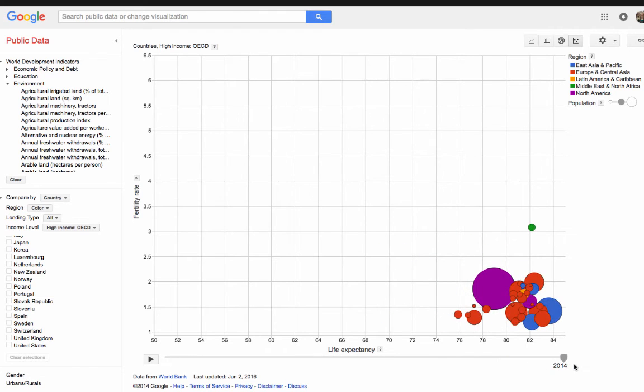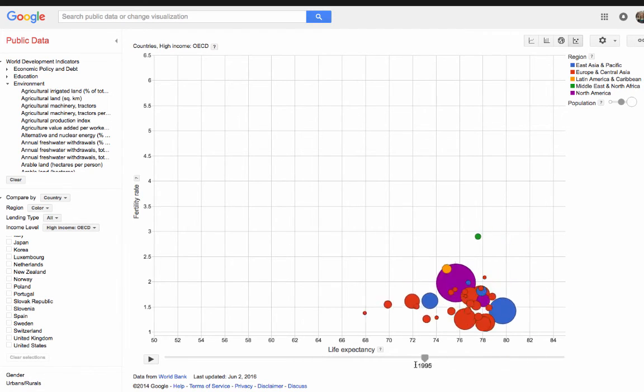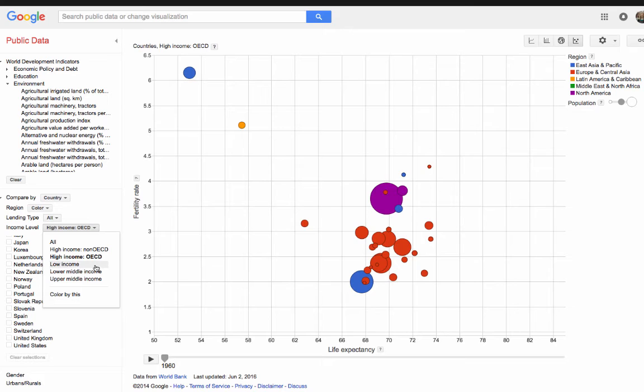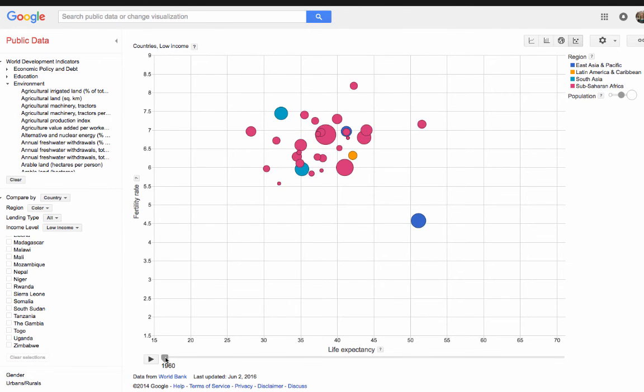If students notice something quite unique or interesting in the data set, then this could also be paired with research. For example, in this context, students might notice quite a drastic change for a particular country in a year.